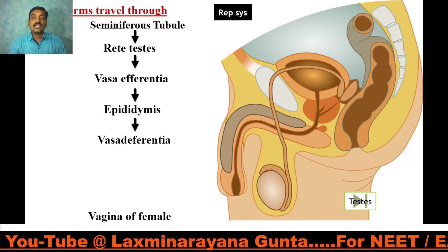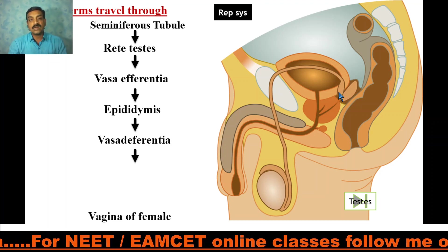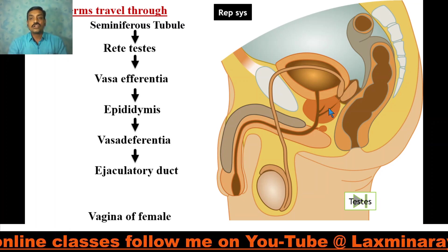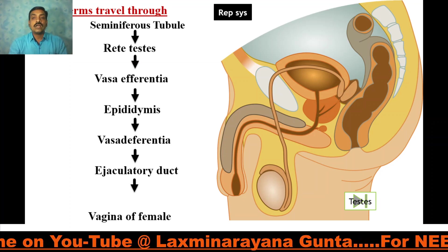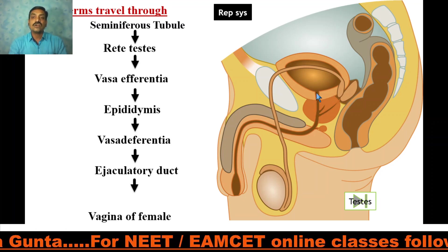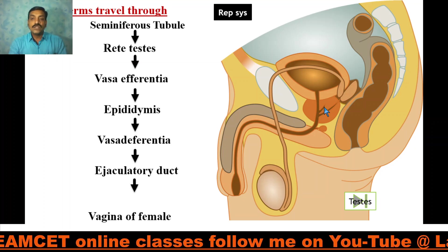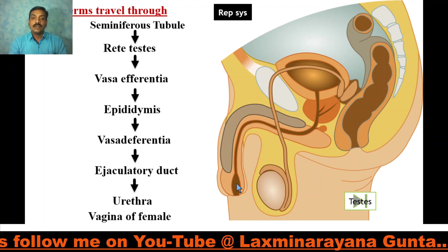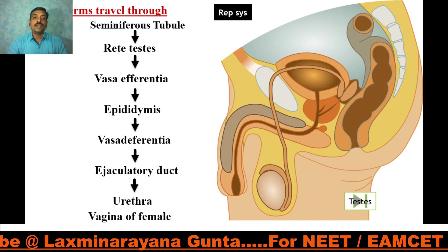The ductus deferens, after joining with the seminal vesicle duct, forms into an ejaculatory duct. A pair of ejaculatory ducts open into the urethra — particularly the prostatic urethra, which passes through the prostate gland. This urethra then passes outside and opens through the urethral meatus, and passes to the vagina of the female.